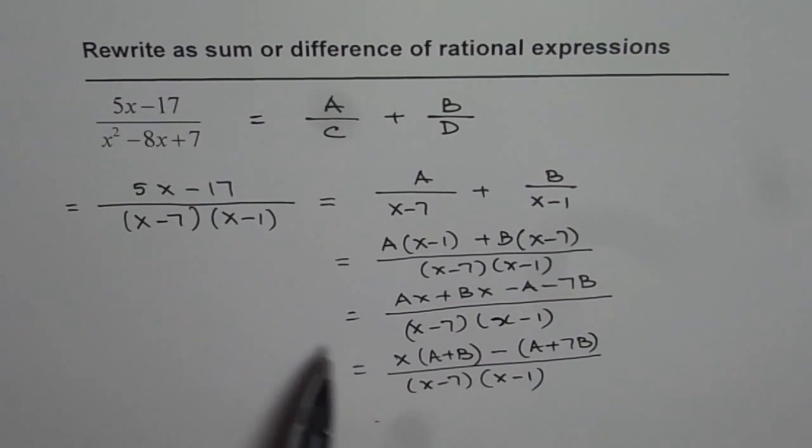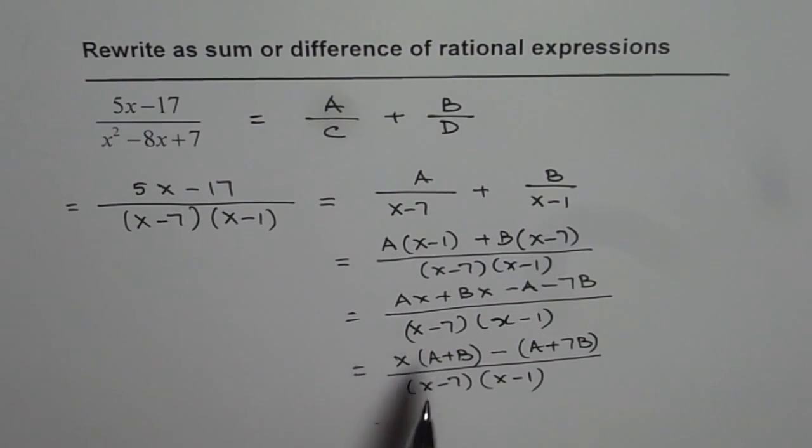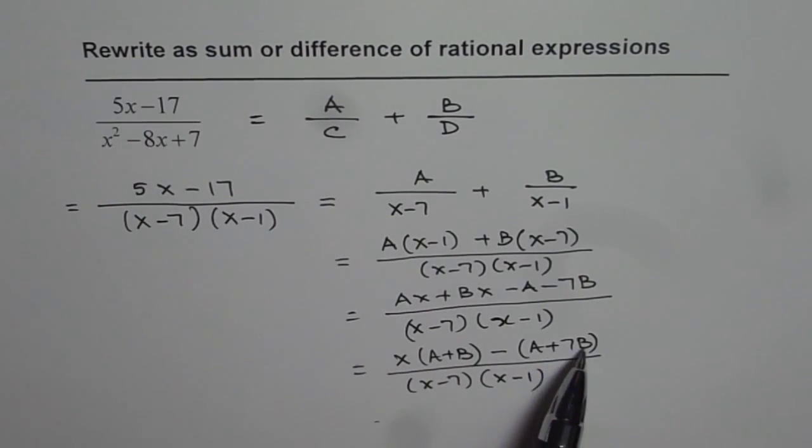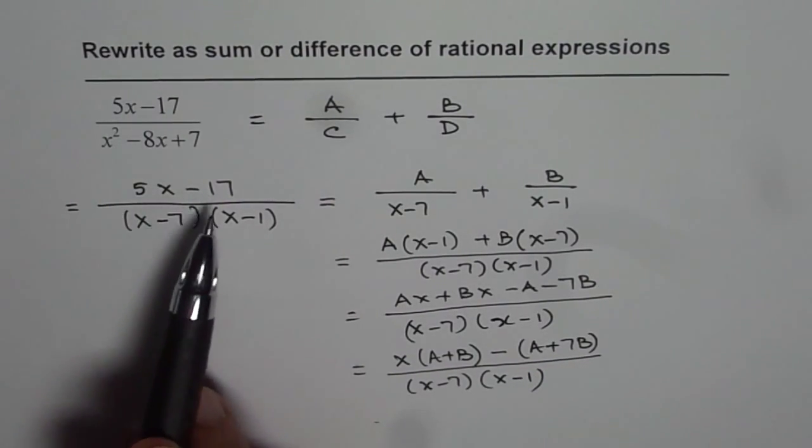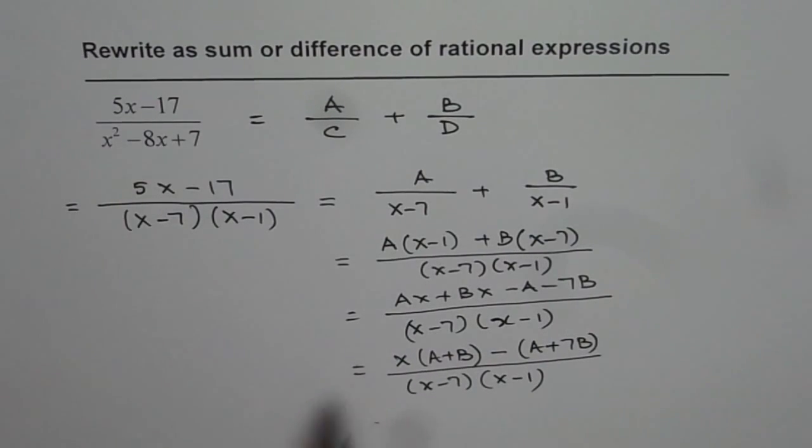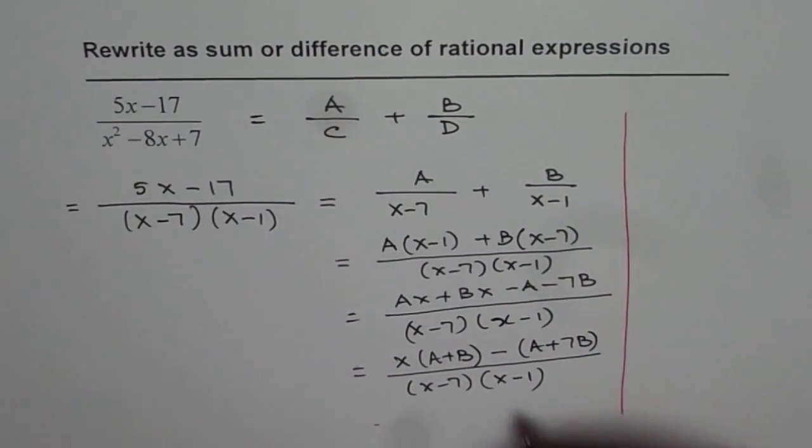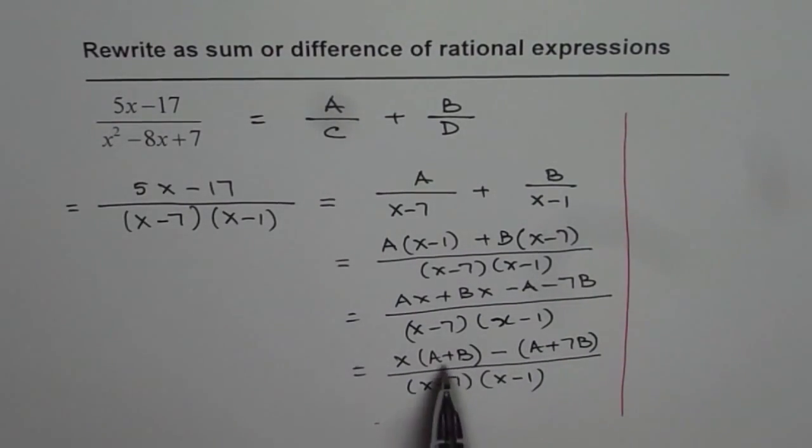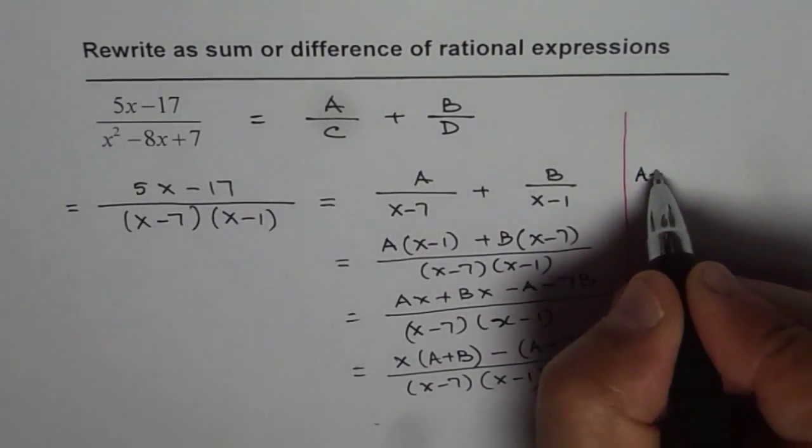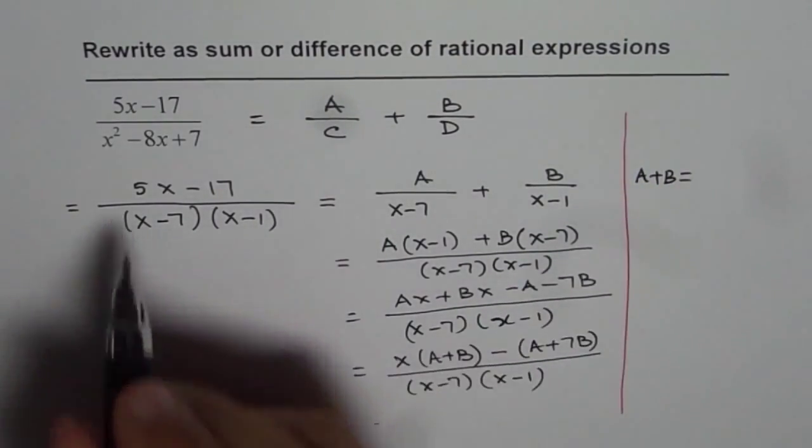Now if you compare these two equations, what do you notice? You notice that the numerator, if a plus b is 5 and a plus 7b is 17, then we get the same result. So that should help us to solve for a and b. So from here, what we get really is that a plus b should be equal to 5.